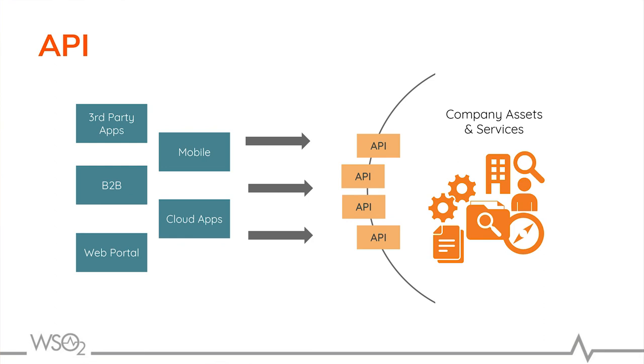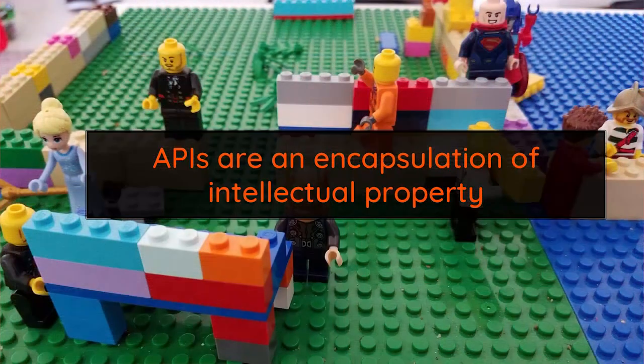These assets can be your databases, internal legacy systems, your CRMs, your Salesforce information — all the internal assets you have in the organization. Essentially, APIs are an encapsulation of intellectual property within the organization. It is very important to open this intellectual property up so that internal developers can use it to build something valuable for your consumers or business partners.